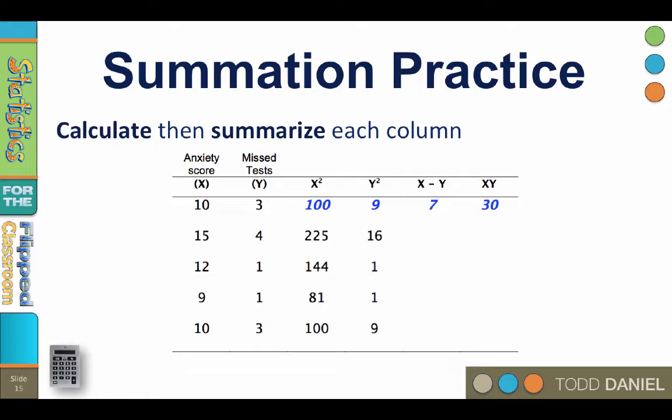The next column is called x minus y. Any idea how you will create it? You will subtract each y value from the corresponding x value. We always work across rows, so don't subtract the 1 from the 10 because the math is easier. Work across columns. So 10 minus 3 is 7, 15 minus 4 is 11, 12 minus 1 is 11, 9 minus 1 is 8, and 10 minus 3 is 7.